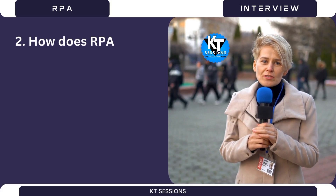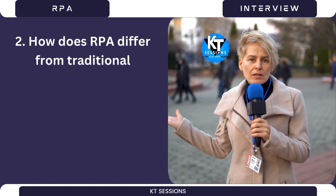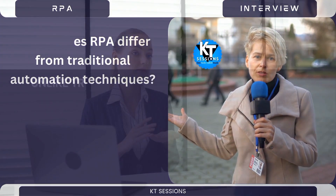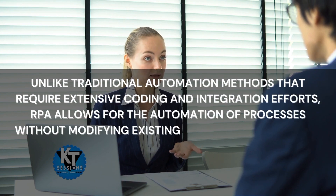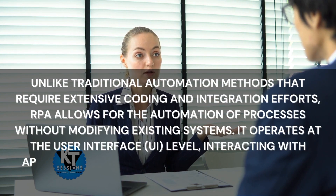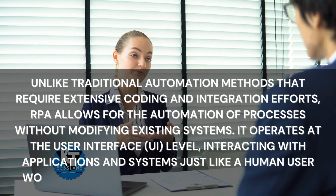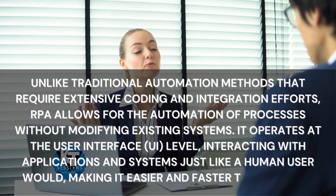Question 2: How does RPA differ from traditional automation techniques? Unlike traditional automation methods that require extensive coding and integration efforts, RPA allows for the automation of processes without modifying existing systems. It operates at the user interface level, interacting with applications and systems just like a human user would, making it easier and faster to implement automation.